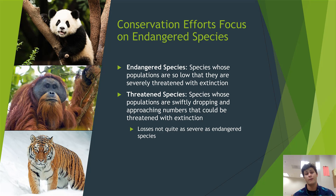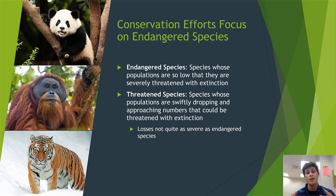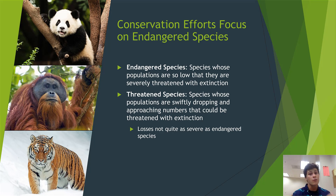Then we have something called a threatened species. A threatened species is a species whose numbers are still kind of large, but those numbers are swiftly dropping and approaching numbers that could soon be threatened with extinction. You can think of a threatened species as having populations that are not quite as bad as those of endangered species, but still pretty low and low enough to be concerning.